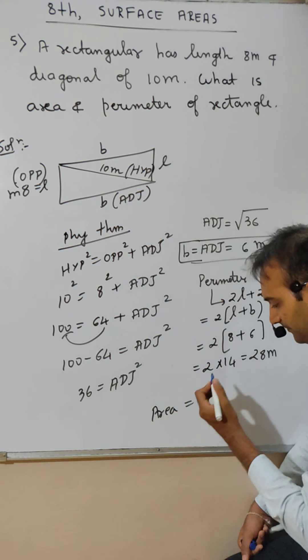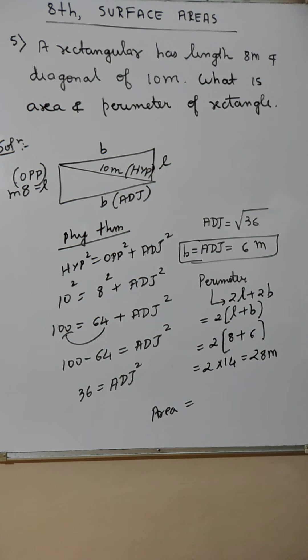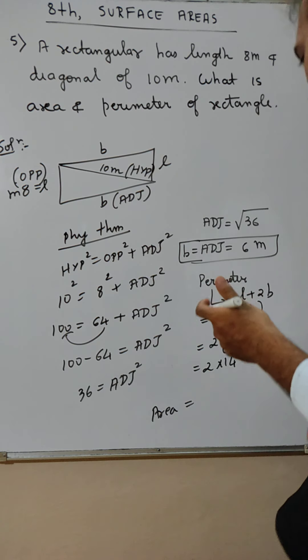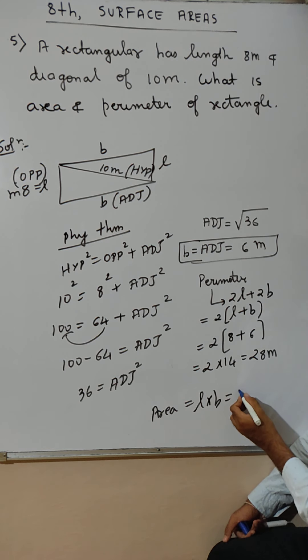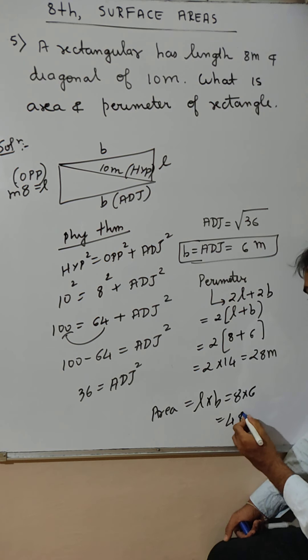Area toh bol toh ab kya hai ga? Area is what? Area is length into breath. Okay. Correct. So, length into breath. Others reply. Correct. Area is length into breath. Length is 8. Breath is 6.